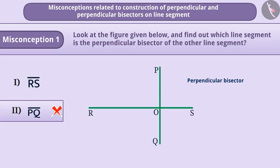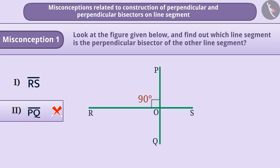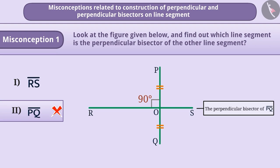Since here, an angle of 90 degrees is formed between line segment RS and line segment PQ, and at the same time, line segment RS seems to divide line segment PQ into two equal parts. Thus, line segment RS is the perpendicular bisector of line segment PQ. Hence, option 1 is the correct answer.